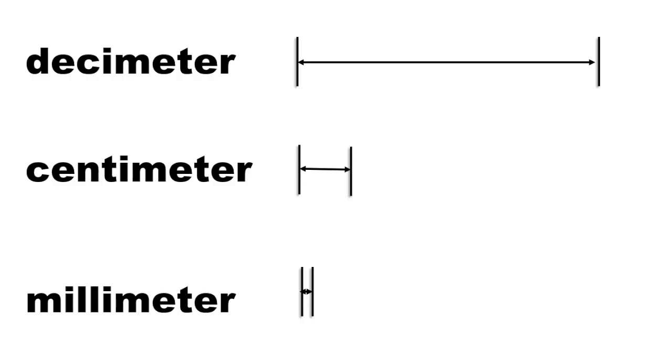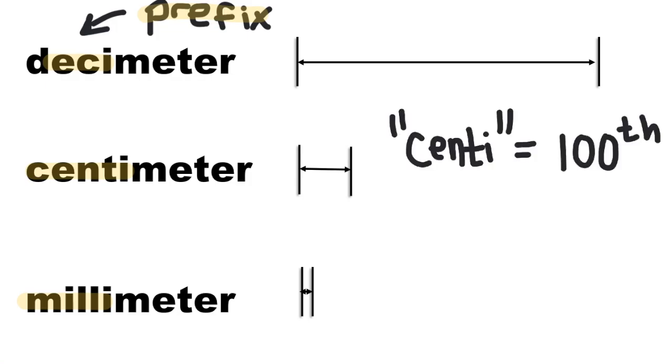The metric system is a universal set of measurement units based on multiples of 10. Prefixes are added to base units to change their size. For example, centi means hundredth, and a centimeter is 100 times smaller than the base unit meter. If you know what the prefixes mean, you can easily convert between different metric units.